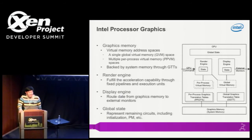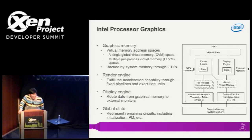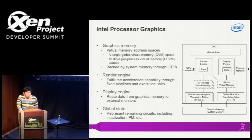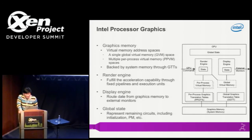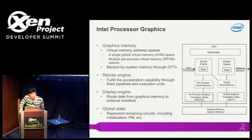For Intel graphics, the first resource is graphics memory. In Intel, we have a single global virtual memory space and multiple per-process virtual memory spaces. For Intel cards, there is no onboard video memory, so all this virtual memory space is backed by system memory. This means we have page tables to do the translation. For the global space, we have the global GTT, and for the per-process virtual memory space, we have the PPGTT.